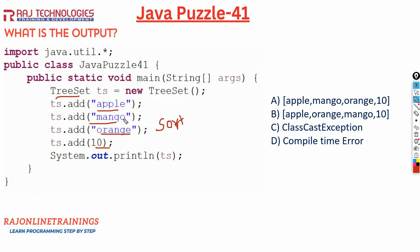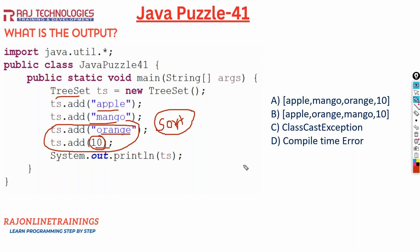If you want to compare elements for sorting, the elements should be of the same type. But in this case we are adding different types — we are adding an integer value 10 along with strings. Since the elements are not of the same type, TreeSet is unable to compare them, so it is going to throw an exception — and the exception name is ClassCastException.